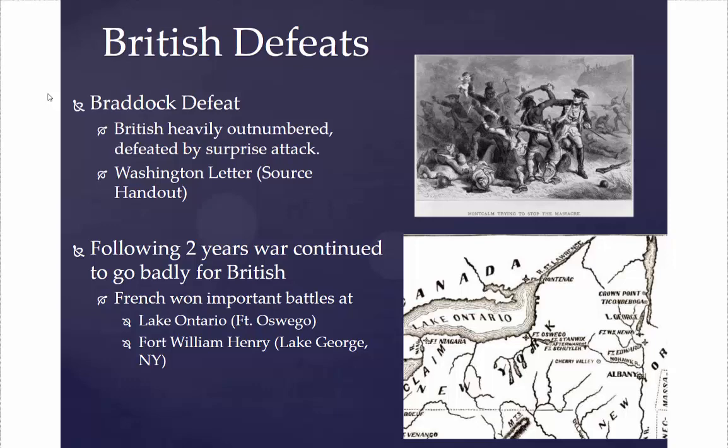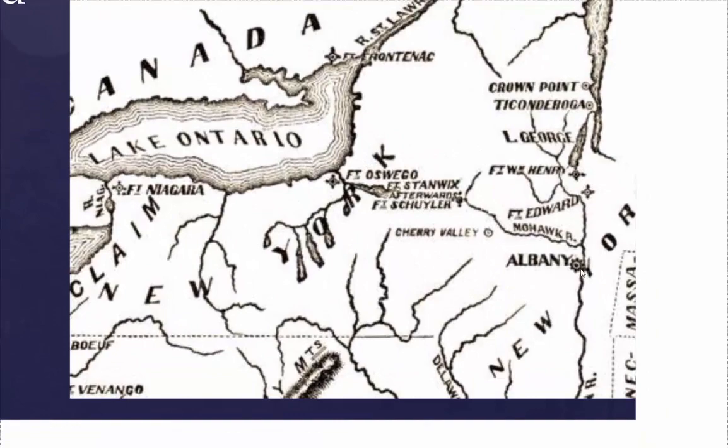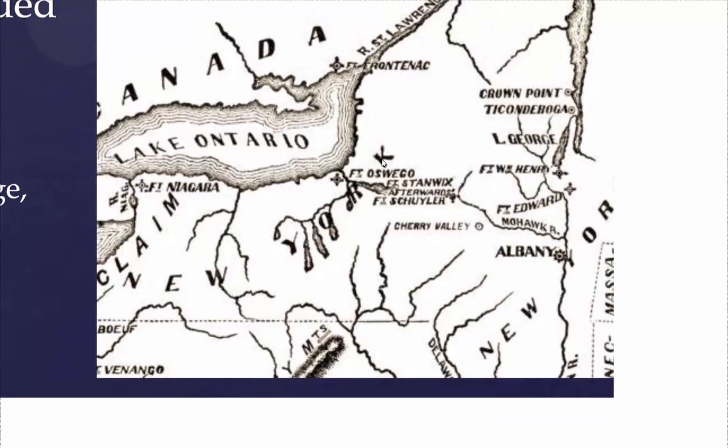In the beginning of the war, the British really were not faring well. General Braddock was defeated when assaulting Fort Duquesne, and the next two years did not go well for the British either. The French would win important battles up at Lake Ontario at Fort Oswego, and also by Lake George at Fort William Henry. So this whole area — Albany, the Hudson River, Lake George, Fort William Henry, and Fort Oswego — was where the French were beating up on the British.